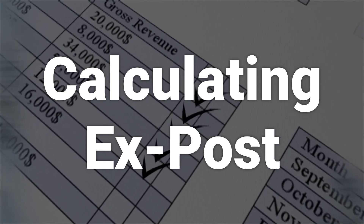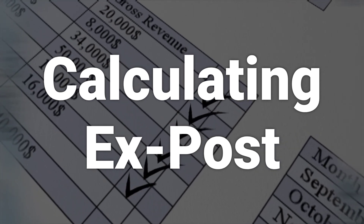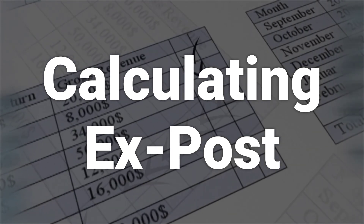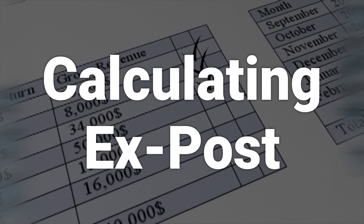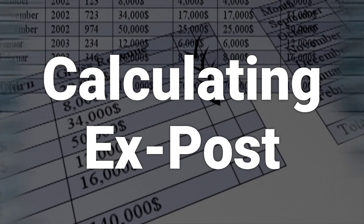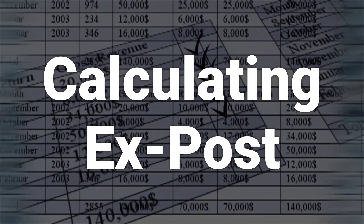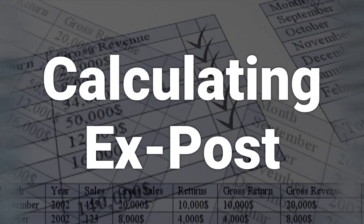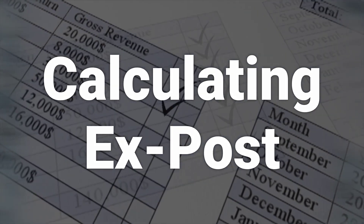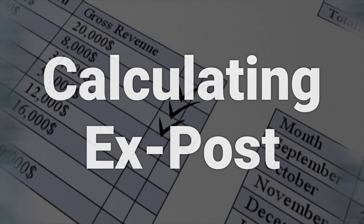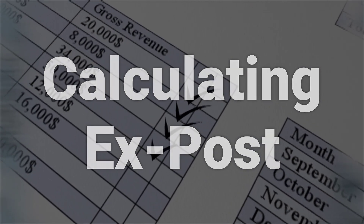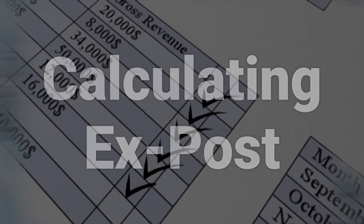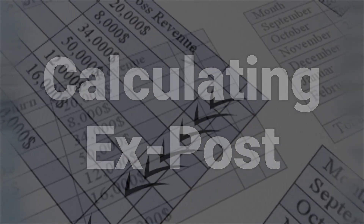For example, for a March 31 quarterly report, the actual return measures how much an investor's portfolio has increased in percentage from January 1 to March 31. If the number is 5%, the portfolio gained 5% since January 1.